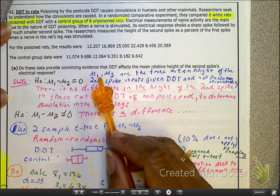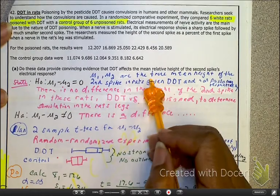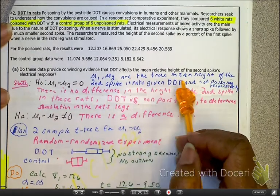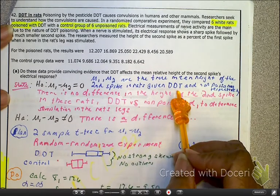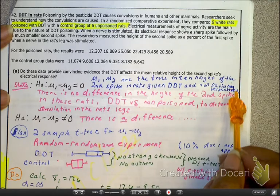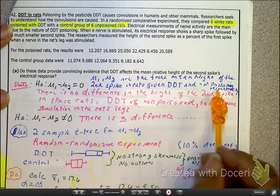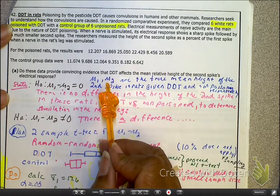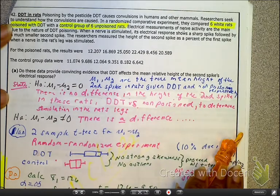And then please notice right here, as I've defined my μ₁ and μ₂, I'm writing it a little differently. See how you like this one. μ₁ and μ₂ are the true mean height of the second spike in the rats, given DDT and non-poisoning respectively. So it's saying here that this one's for the DDT and this one's for the control group. Yeah, you can get away with it on the AP test.